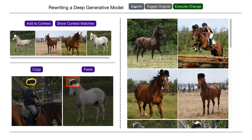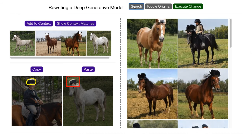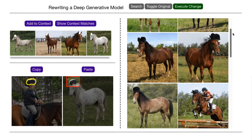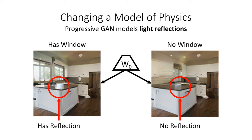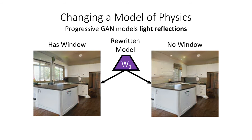My last example is a short demonstration of changing a model of a physical rule instead of an object. We start with a progressive GAN trained on kitchens. One of the remarkable things about the model is that it seems to approximately model the reflected light in a scene. When there's a window, light gets reflected off of countertops. When there are no windows, there are no reflections. Here we can ask, can this rule for light be changed? We want to know, can we eliminate reflections when there are windows? Or can we create reflections without windows? It turns out, yes we can.